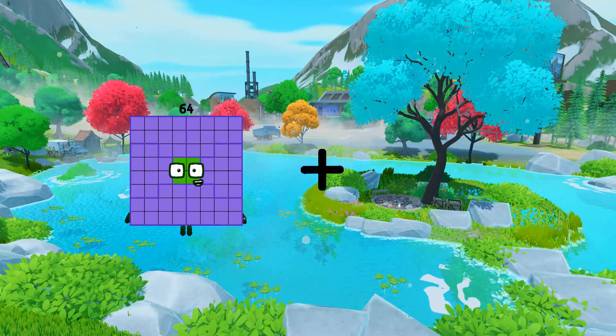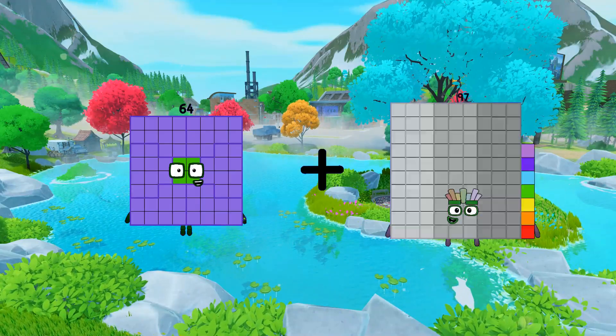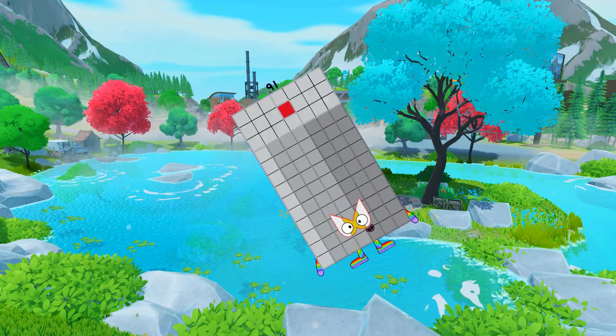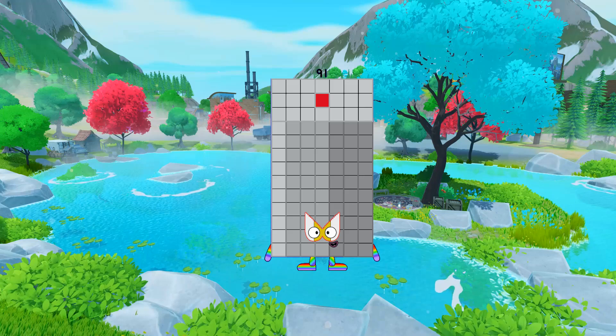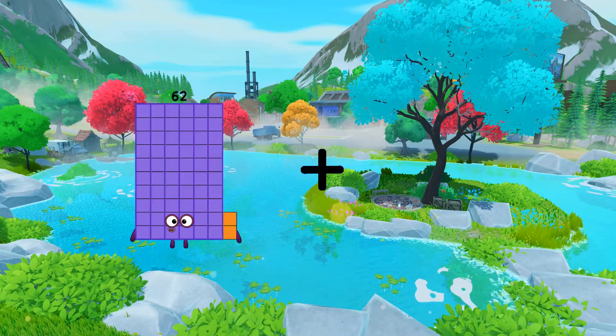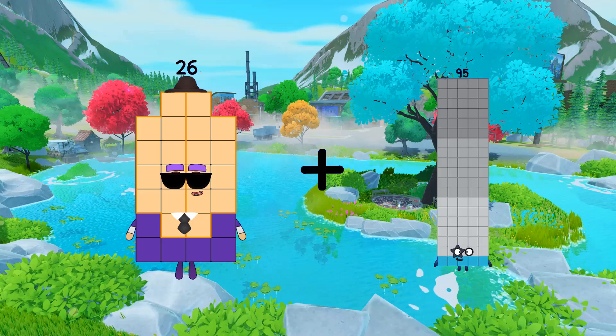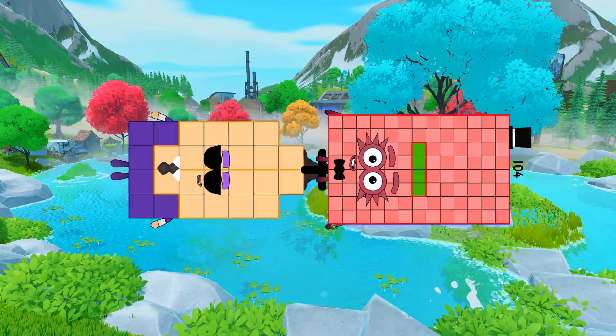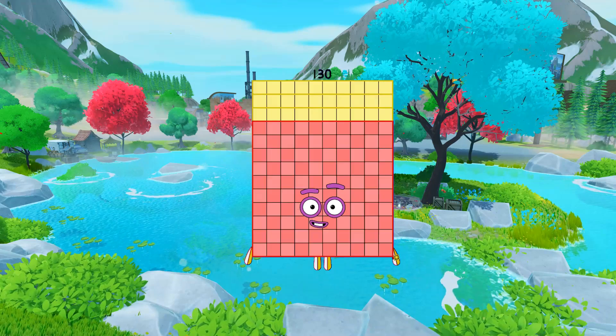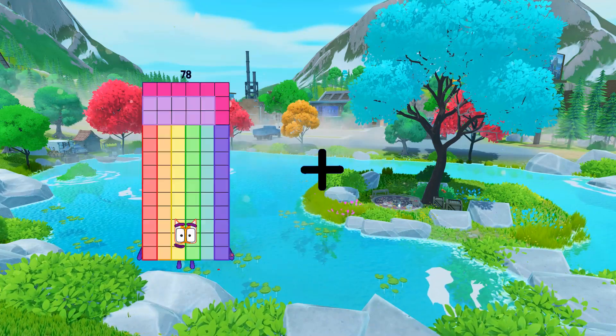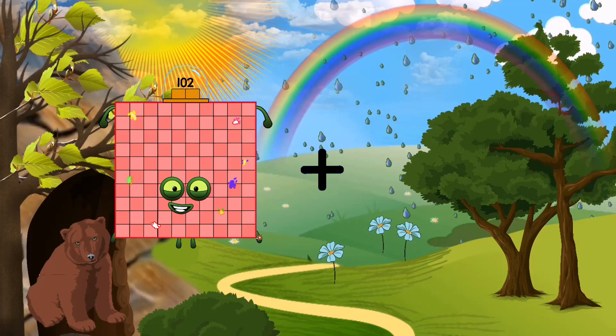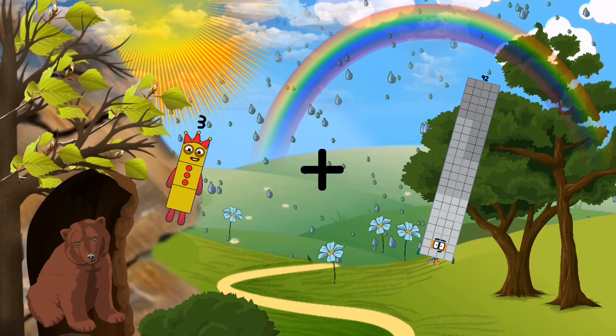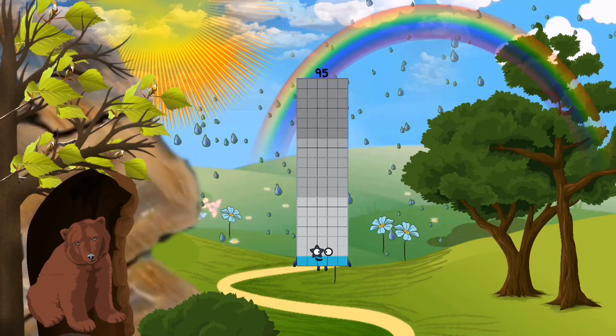64 plus 27 equals 91, 26 plus 104 equals 130, 3 plus 92 equals 95.